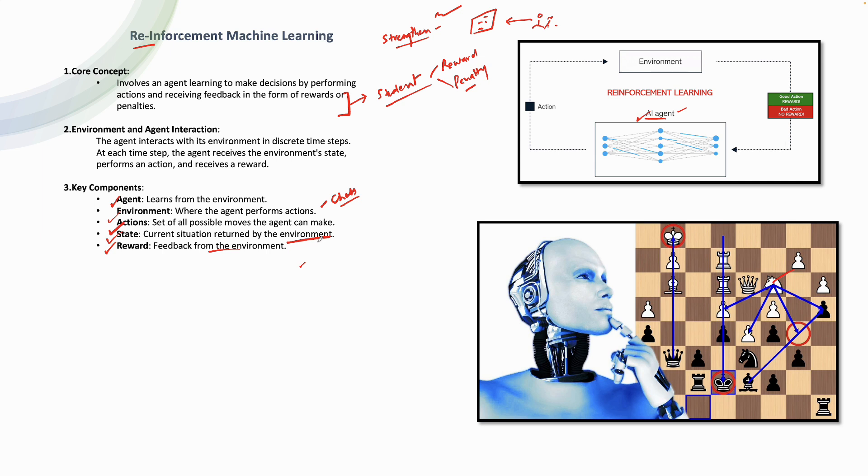So agent is learning from environment. Environment is nothing but your game of chess or chess board. Action is the moves that you are making. State is that after every action, there is a reaction. Remember, after every action, there is a reaction. And that reaction is in the form of first, you get the state of the environment. And based on that, you can make out whether it would be a reward or a penalty.